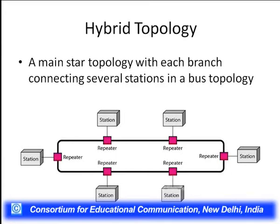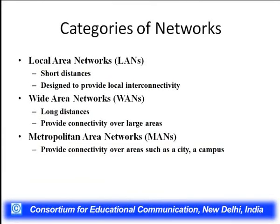Besides these four to five types of topologies, the most commonly employed topology is a hybrid topology. Hybrid topology means that a combination of different topologies is employed to create a network, since each topology has its own advantages and disadvantages. In order to create a fault-tolerant, cost-effective, and efficient network, a combinational approach is used where different topologies are applied as needed. As you can see in this diagram, the main star topology has each branch connecting several stations in a bus topology.